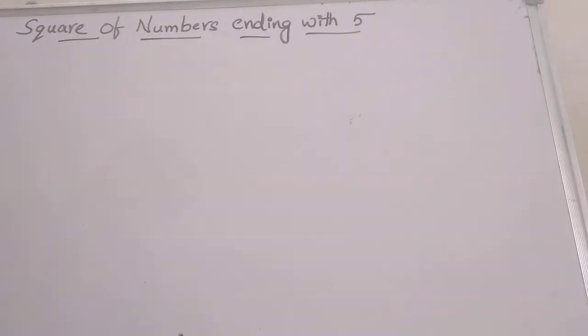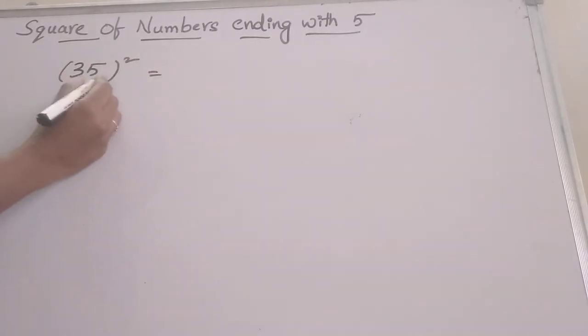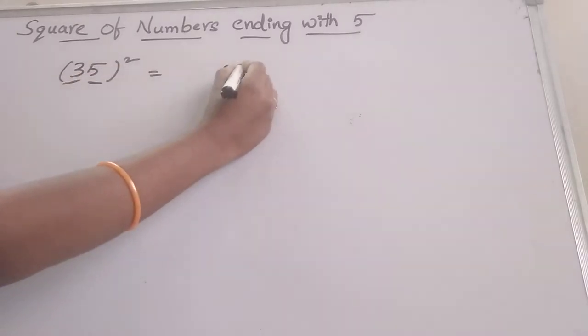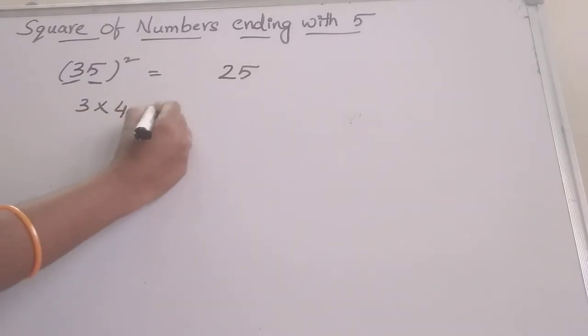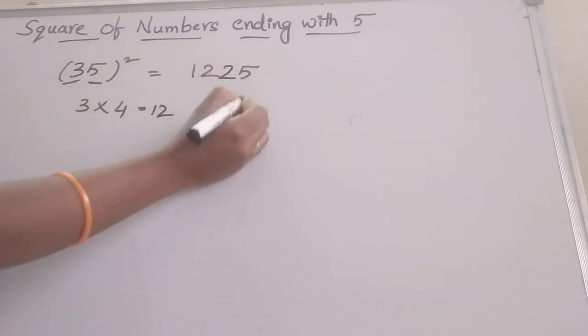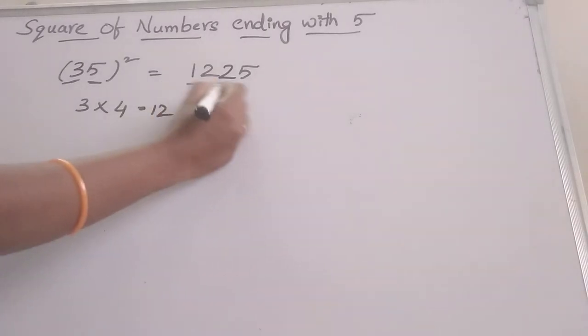First, we can take one example: finding the square of 35. This 35 should be divided into two parts - the first digit and the second digit. Finding the square of the second digit: 5 squared is 25. Write 25 here. This 3 should be multiplied with 4. What comes after 3? 4. So 3 times 4 is 12. Write 12 here. 1225 is the answer. So simple.